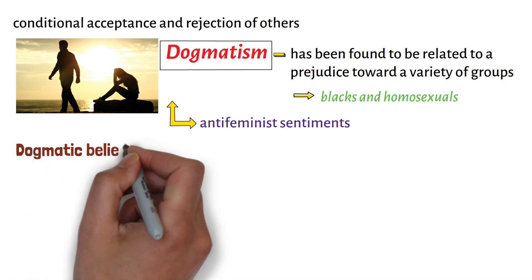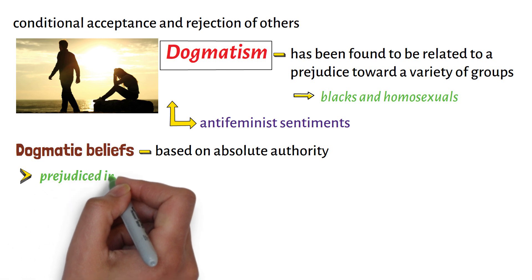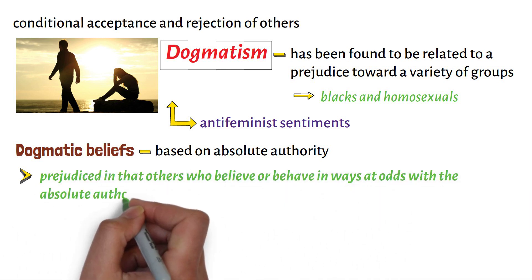Dogmatic beliefs, based on absolute authority, may only appear as prejudiced in that others who believe or behave in ways at odds with the absolute authority must be rejected.